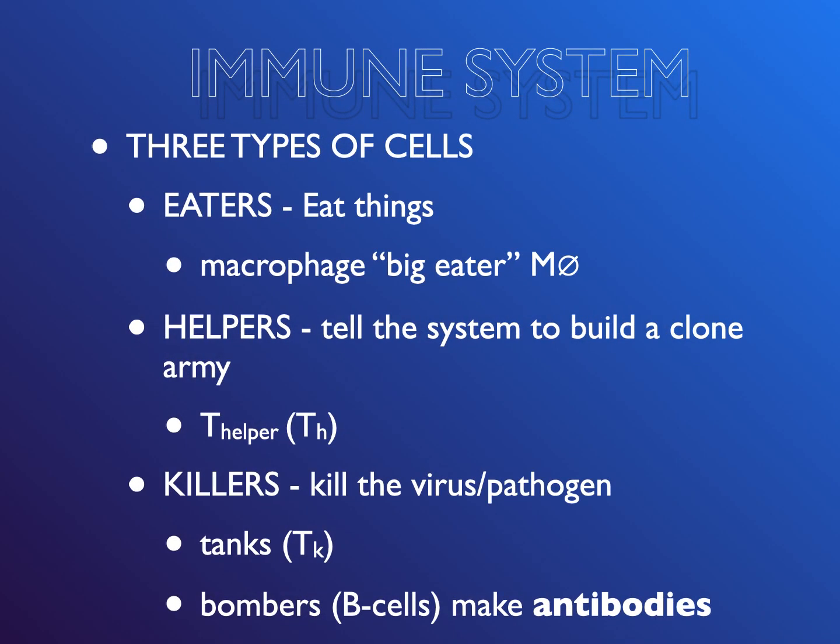So let's get into the immune system. You have three types of cells: eaters, helpers, and killers. The eaters eat things, and one in particular that you need to know about is called macrophage. He is a big eater — that's literally what that name translates to — and it's shorthandeded with an M and a Z with a line through it. So if you see that, I'm referring to macrophage.